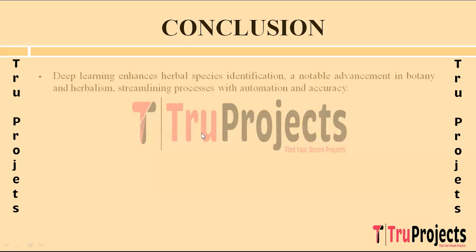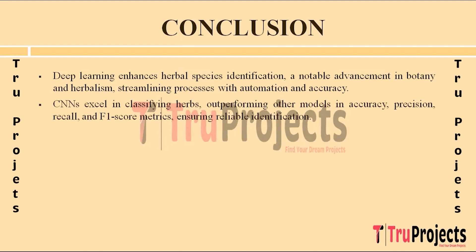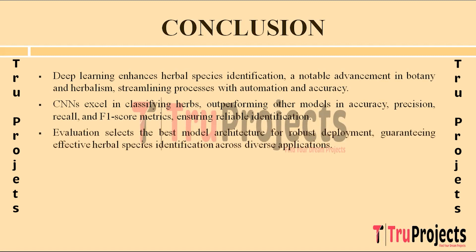In conclusion, the project successfully demonstrates the effectiveness of deep learning techniques in automating and enhancing the process of herbal species identification, marking a significant advancement in the field of botany and herbalism. Through the implementation of deep learning models such as MobileNet, MobileNetV2, CNN, and Xception, the project achieves improved accuracy and efficiency in classifying various herb types. Convolutional Neural Networks emerge as the top performer, surpassing other architectures in accuracy, precision, recall, and F1 score metrics, with the comprehensive evaluation enabling selection of the most robust and reliable solution.